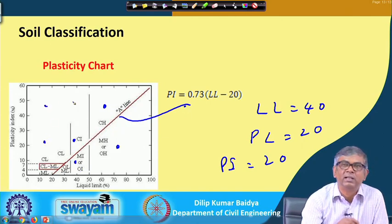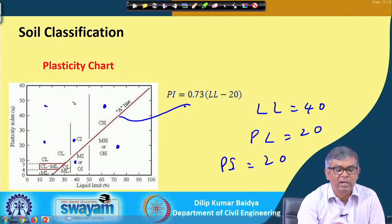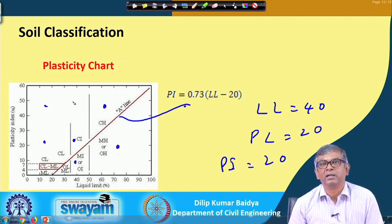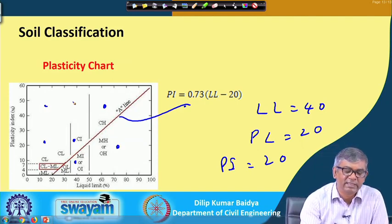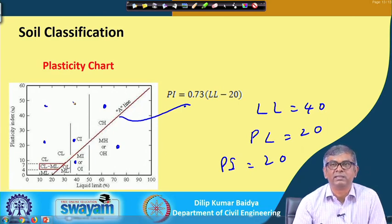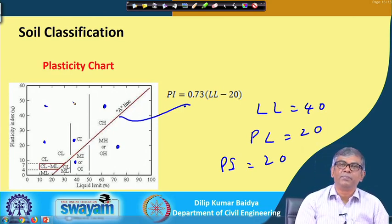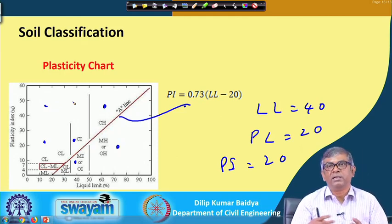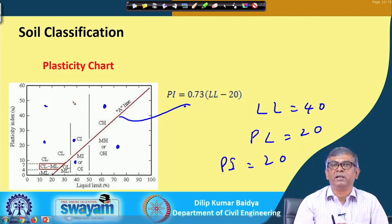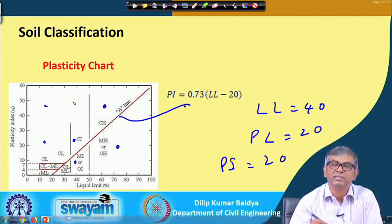The point can fall anywhere on the chart, and based on its position I can classify the fine-grained soil as CH, CI, MH, OH, MI, or OI. Once classified, for example CH — clay of high plasticity — means it is a problematic soil generally, and you have to take care while designing the foundation system.